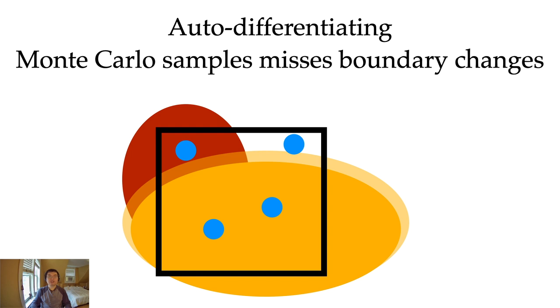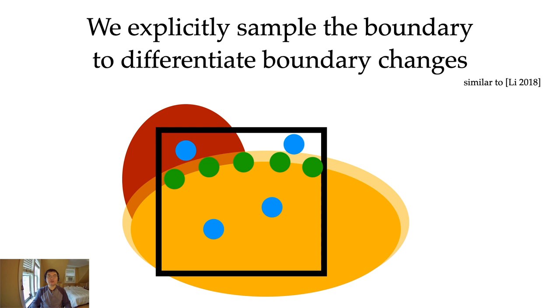The problem with automatic differentiating Monte Carlo sampling is that the Monte Carlo samples do not really land in places where interesting events happen. Suppose we are deforming the yellow shape, all changes are happening at the boundaries, and Monte Carlo samples have a zero probability of detecting it. If you ask one of these Monte Carlo samples, they will just say the derivative is zero. So what we do is to explicitly sample the boundary to detect the change when computing the derivatives.